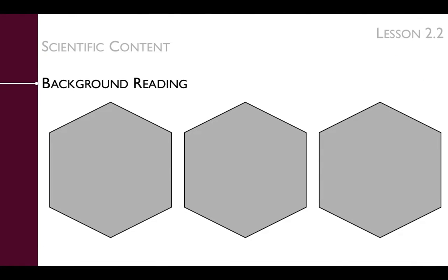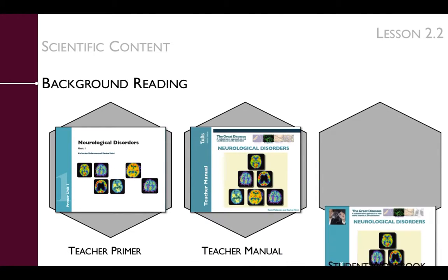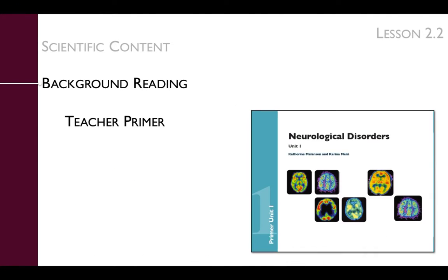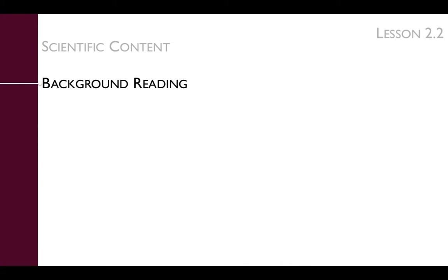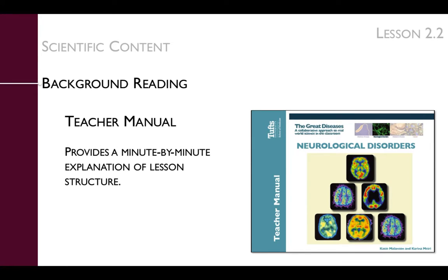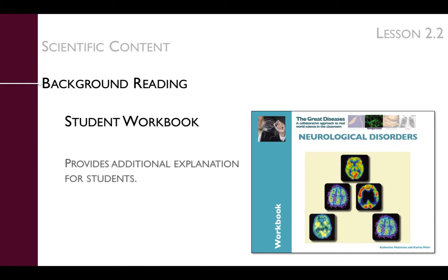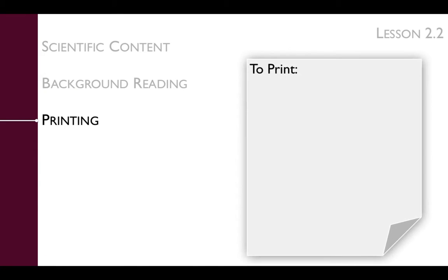You can review the scientific content in the background reading provided in the Teacher Primer, the Teacher Manual, and the Student Workbook. The Teacher Primer provides in-depth knowledge about the scientific content. The Teacher Manual, or Lesson Plan, provides a minute-by-minute explanation of lesson structure, including instructions on how to manage the discussion and activity. The Student Workbook provides additional explanation for your students. You'll need to print the activity worksheets for your students.